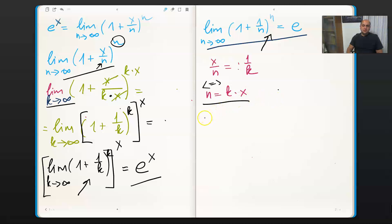And now let's consider maybe some examples. So of course we know that the limit, for example, n towards infinity of 1 plus, let's say, minus 1 divided by n to the power of n.